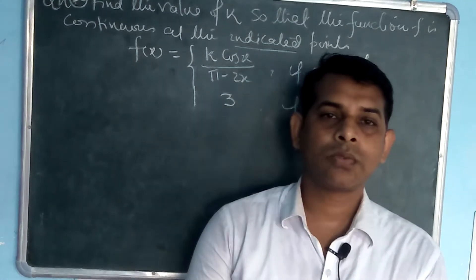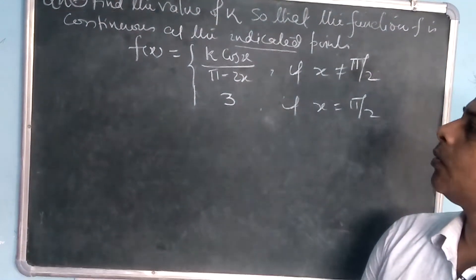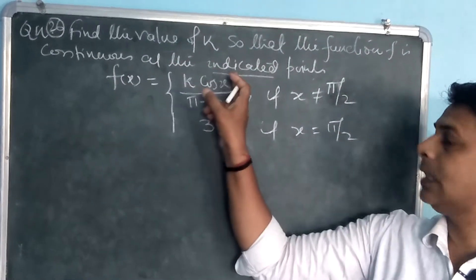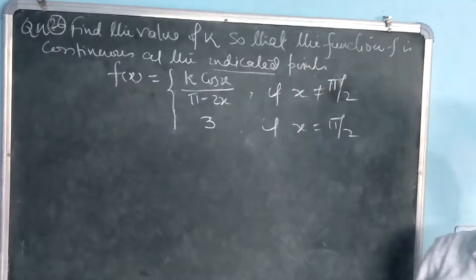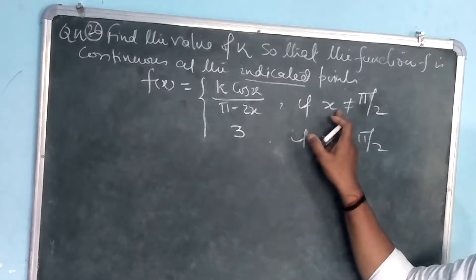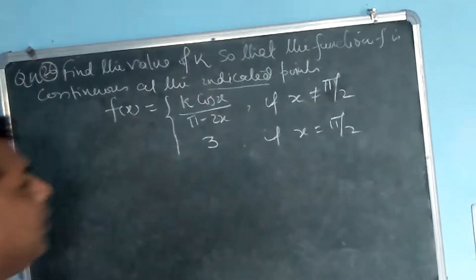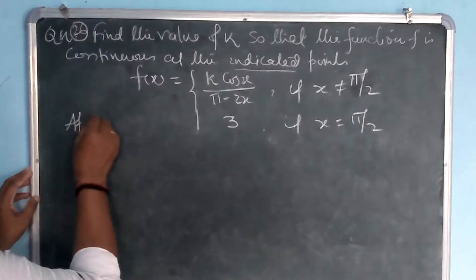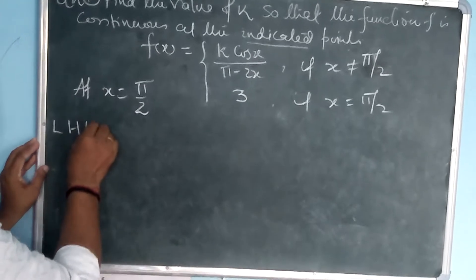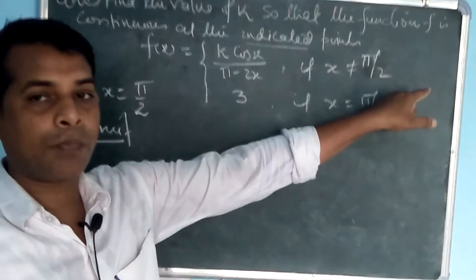Hello friends, now I'm going to continue question number 26 for the same exercise 5.1. The question is: find the value of k so that the function f is continuous at the indicated point. f(x) is equal to k·cos(x) / (π - 2x) if x is not equal to π/2, and 3 if x is equal to π/2. First of all, you have to check at x = π/2.